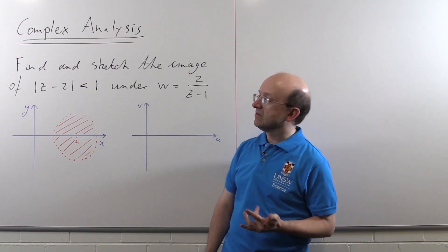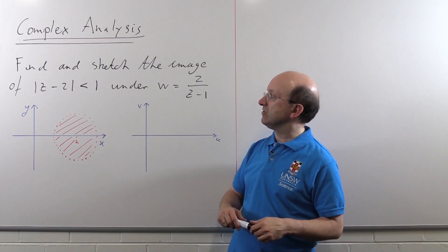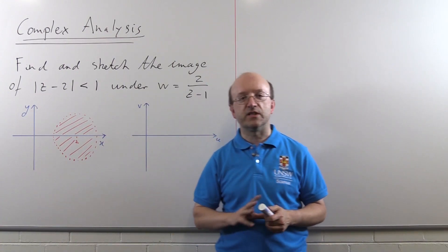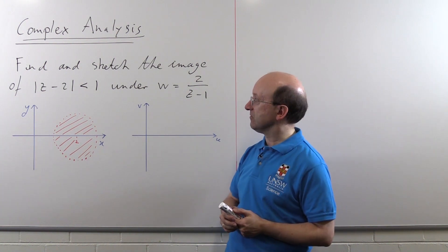So, this is a typical sort of problem. We're asked to find and sketch the image of the region |z - 2| < 1 under the mapping w = 2/(z - 1).